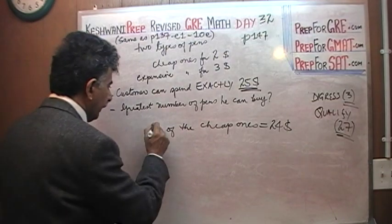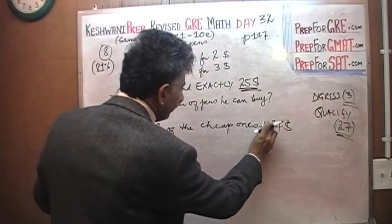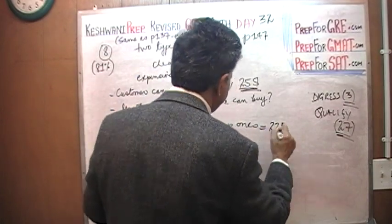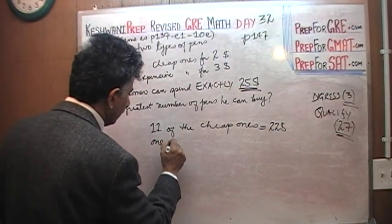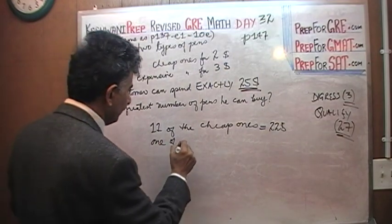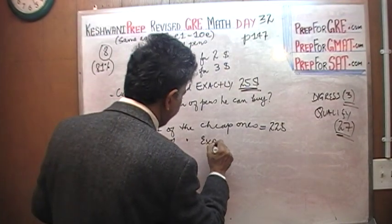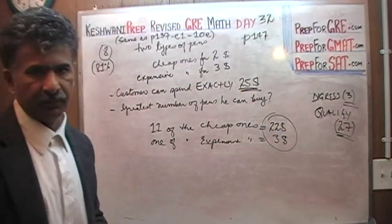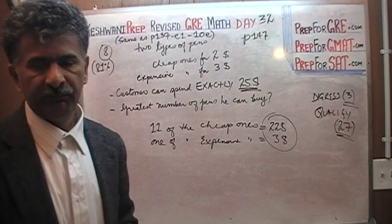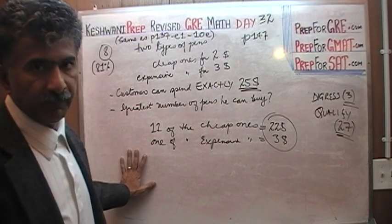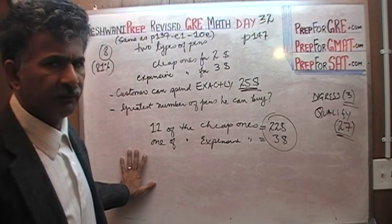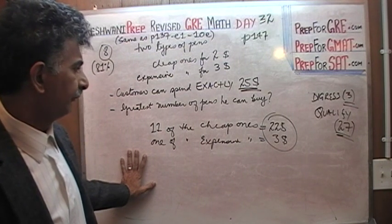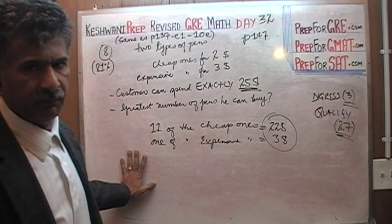But now, we will buy 11 pairs of the cheap ones, which will be $22, and one of the expensive one for $3, for a total of exactly $25. But it doesn't change the fact that you are going to buy 12 of them. And if I keep saying 12 pairs, just ignore the part pairs. Because like I said, in the old question, I think they were talking about pairs of socks. They were cheap pair of socks and expensive pair of socks.